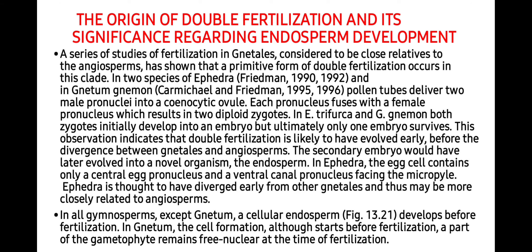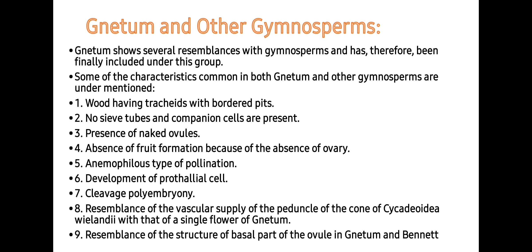In Ephedra trifurca and Gnetum gnemon, both zygotes initially develop into an embryo, but ultimately only one embryo survives. This indicates that double fertilization likely evolved before the divergence between Gnetales and angiosperms. The secondary embryo would have later evolved into a novel organism — the endosperm. In Ephedra, the egg cell contains only a central pronucleus and a ventral canal pronucleus facing the micropyle. In all gymnosperms except Gnetum, a cellular endosperm develops before fertilization; in Gnetum, cell formation begins before fertilization but part of the gametophyte remains free-nuclear at the time of fertilization.